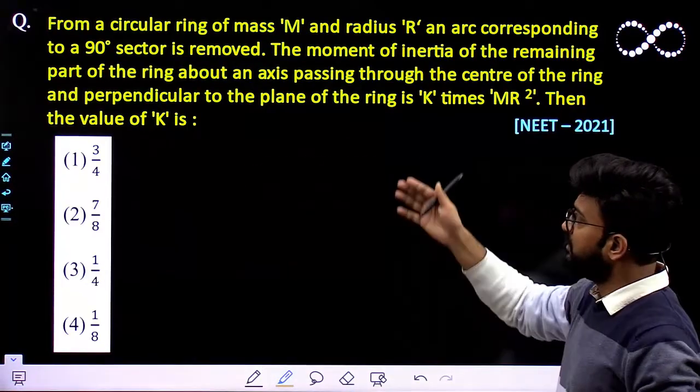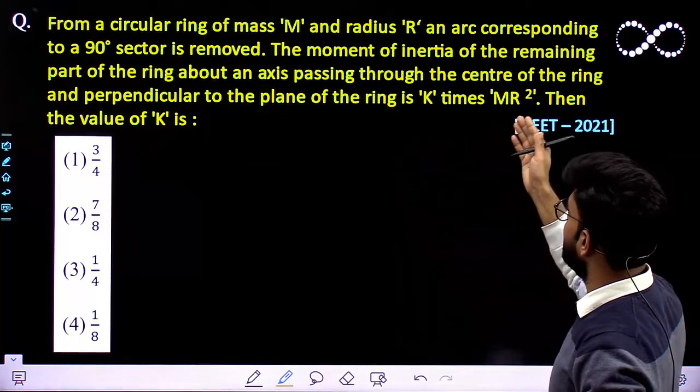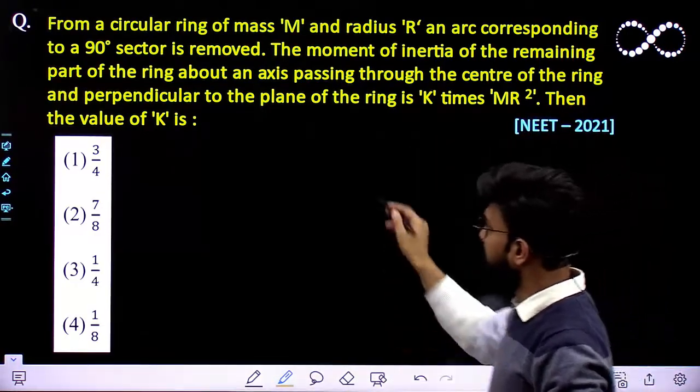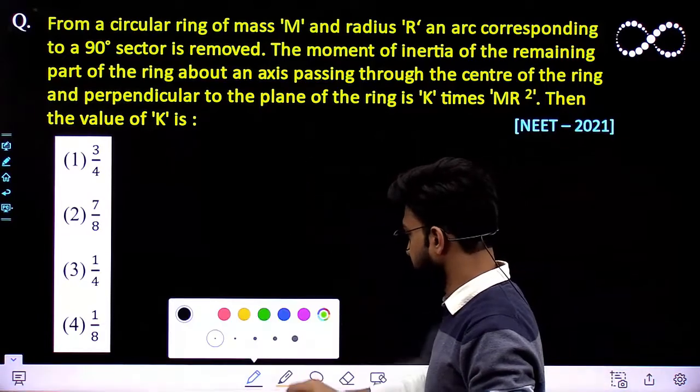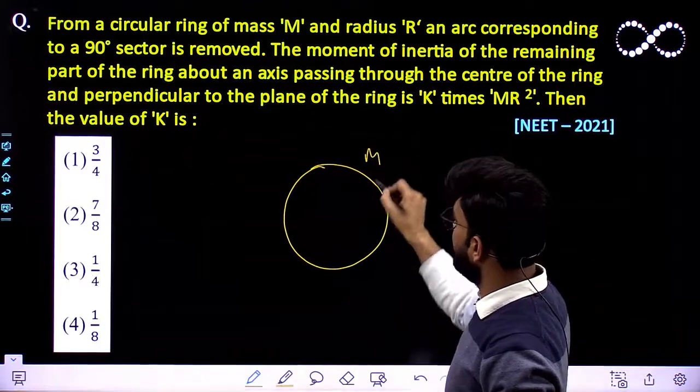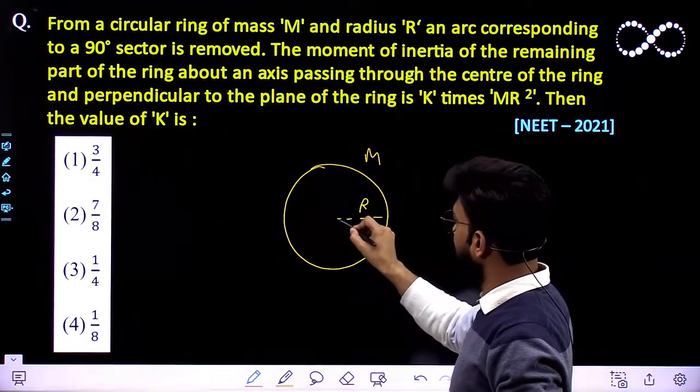Let us see this question first. The question says: for a circular ring of mass M and radius R, an arc corresponding to 90 degree sector is removed. That means you have been given a ring whose mass is M and radius is R.